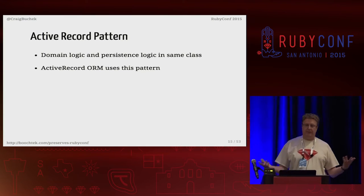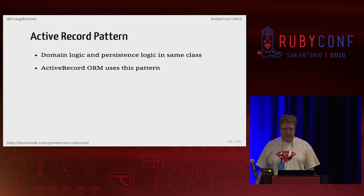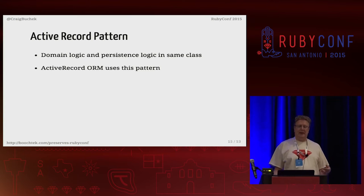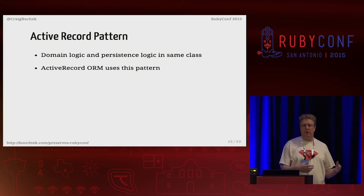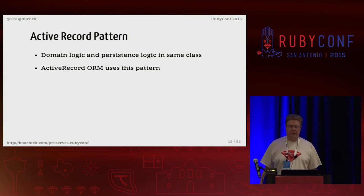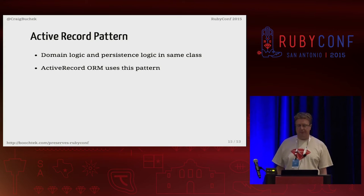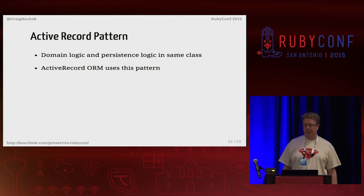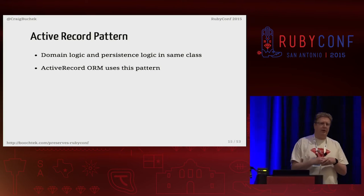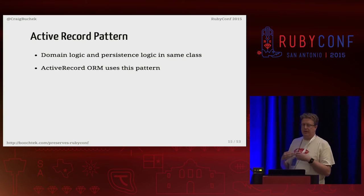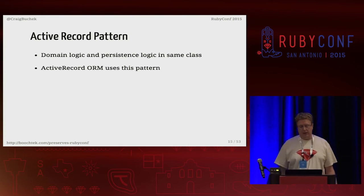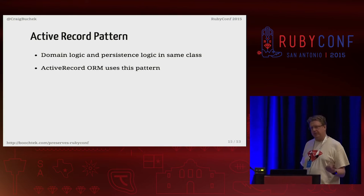Domain logic is the things in our application and the interactions between those things. ActiveRecord the ORM is based on the Active Record pattern — I use 'ActiveRecord' without a space for the gem and 'Active Record' with a space for the pattern. The pattern was first described well by Martin Fowler in his book Patterns of Enterprise Application Architecture. It's a bit dry and technical, but it's the first place to look if you want to learn about patterns, architecture, and enterprise applications. He discusses the tradeoffs of the Active Record pattern.